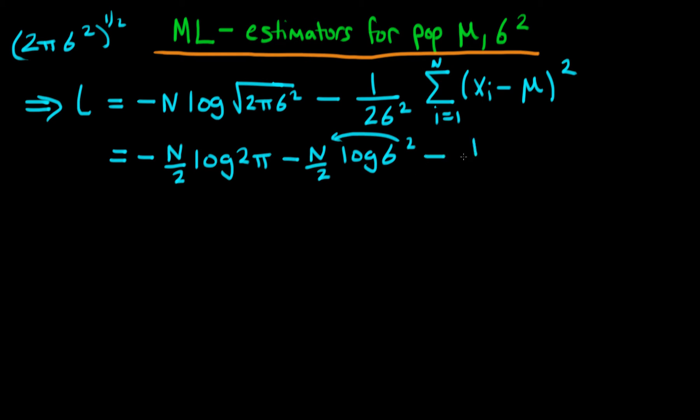And then the last term just remains the same. So it's just 1 over 2 sigma squared times the sum from i equals 1 to n of xi minus mu all squared. Okay, so this log likelihood now is in a position whereby we can start to differentiate it in order to estimate the particular parameters.